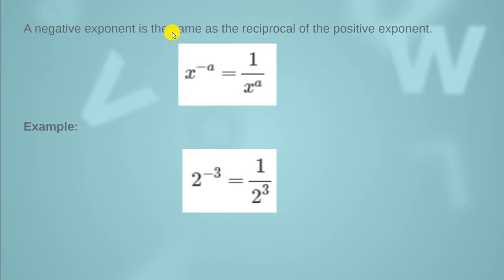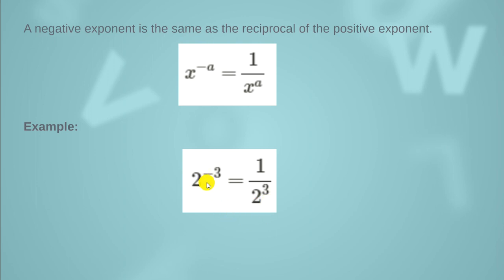Here is another rule. A negative exponent is the same as the reciprocal of the positive exponent, which means that x raised to the power minus a can be brought from the numerator to the denominator. For example, 2 raised to the power minus 3, when brought to the denominator, is written as 1 divided by 2 raised to the power 3.